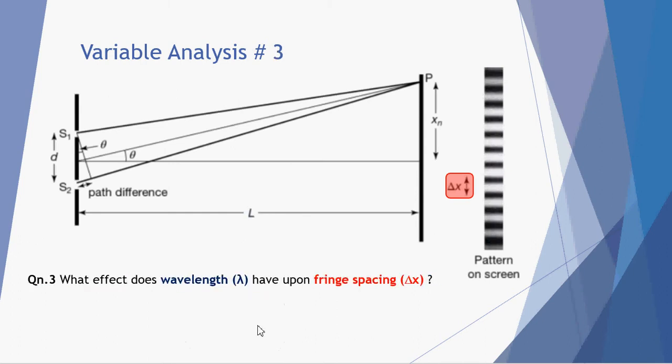Our final consideration is what happens when we change the wavelength of our light when the lambda increases? What effect does a different wavelength have upon the fringe spacing delta x? So here we can see a green wavelength of 532, and this is its pattern, its interference pattern, compared to a larger wavelength of 635, the red.